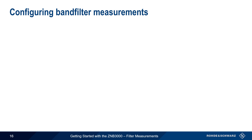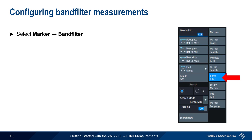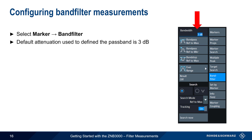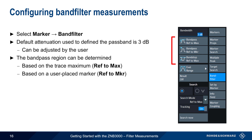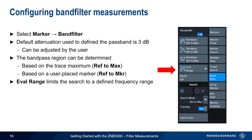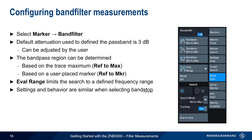To configure band filter measurements, simply select Marker and then Band Filter. The default attenuation value used to define the passband is the standard 3 dB, but this is also user-adjustable. The trace region containing the bandpass can be determined either based on the maximum trace value or based on a user-placed marker. In addition, the band filter search can be limited to a defined frequency or evaluation range. Note that in most cases, the default values for all of these parameters will produce proper results. The settings and behavior are similar when using the band filter feature to evaluate bandstop or notch filters as well.